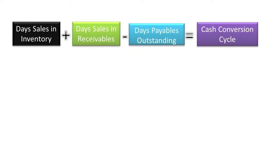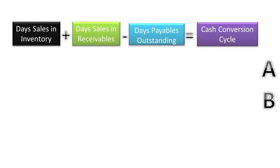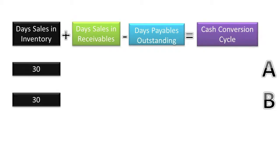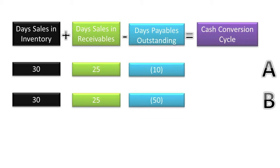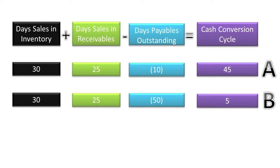Two virtually identical companies, Company A and Company B, have Days Sales in Inventory of 30 and Days Sales in Receivables of 25. However, their Days Payables Outstanding are 10 and 50, respectively. Compute both companies' Cash Conversion Cycles. Company A: 45 days. Company B: 5 days.